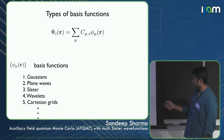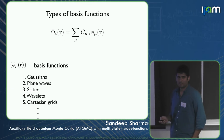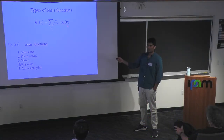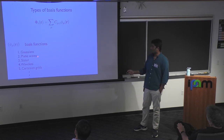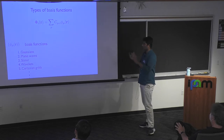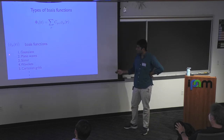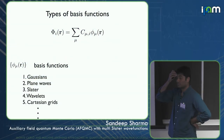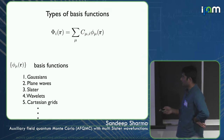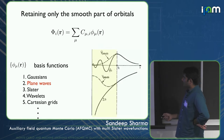Let me briefly touch on the basis functions. You can write molecular orbitals as linear combinations of basis sets. There are several types: Gaussians, plane waves, Slaters, wavelets, Cartesian grids — but the two most common are Gaussians and plane waves. Gaussians are typically used in the quantum chemistry community, and plane waves are used in the physics community.